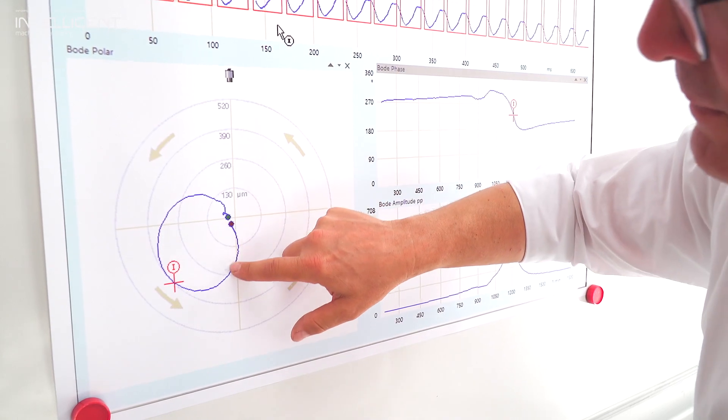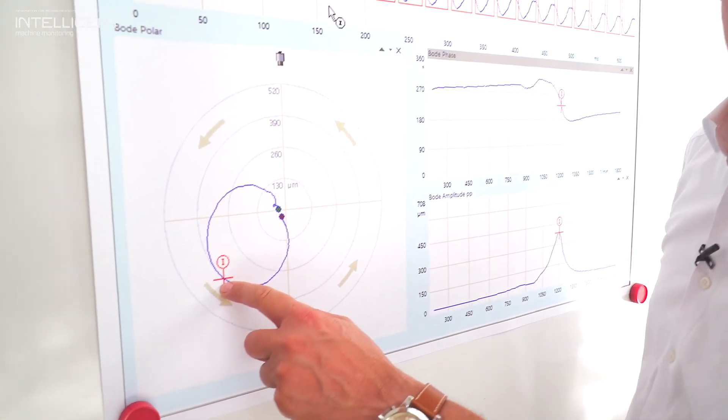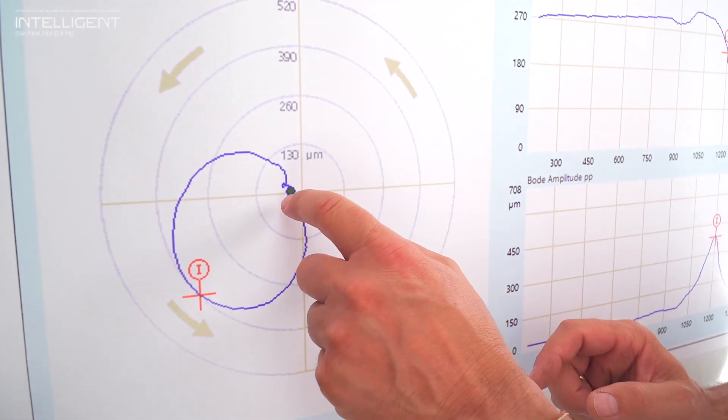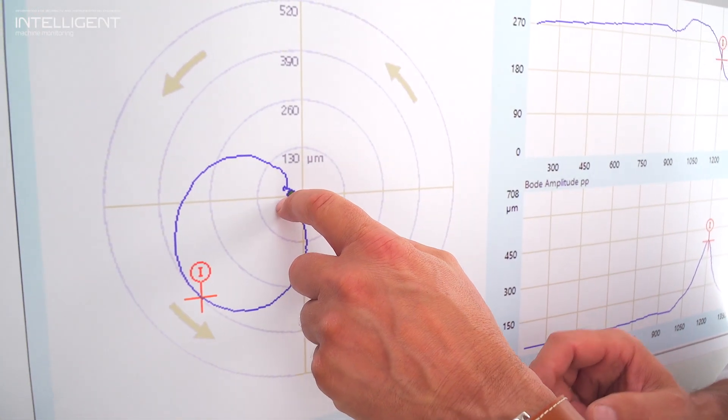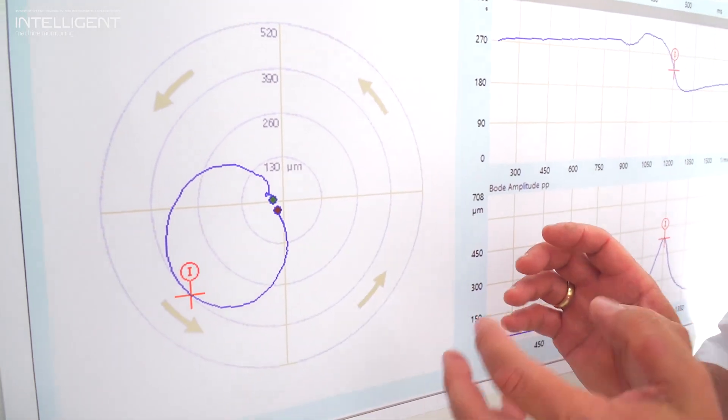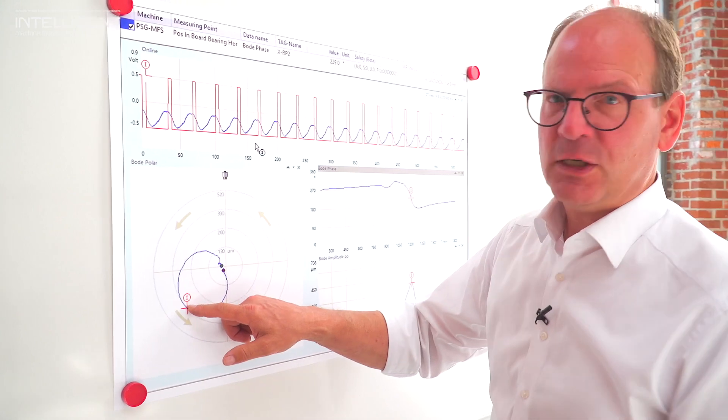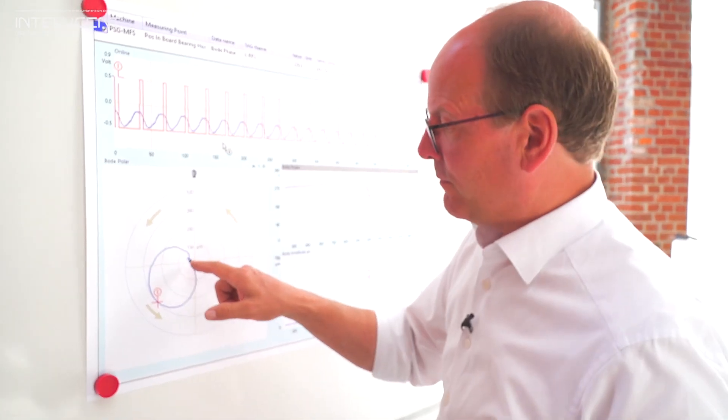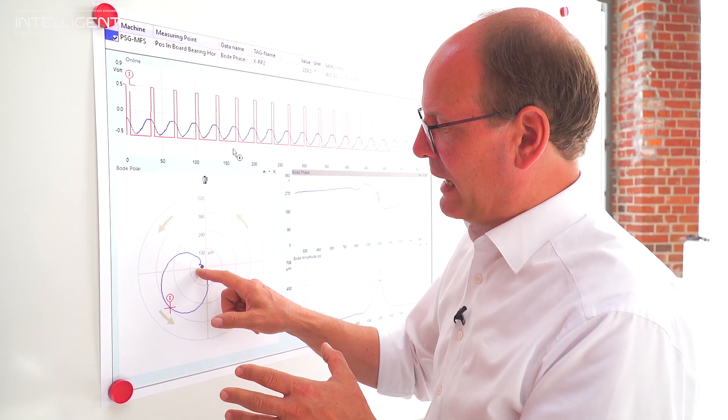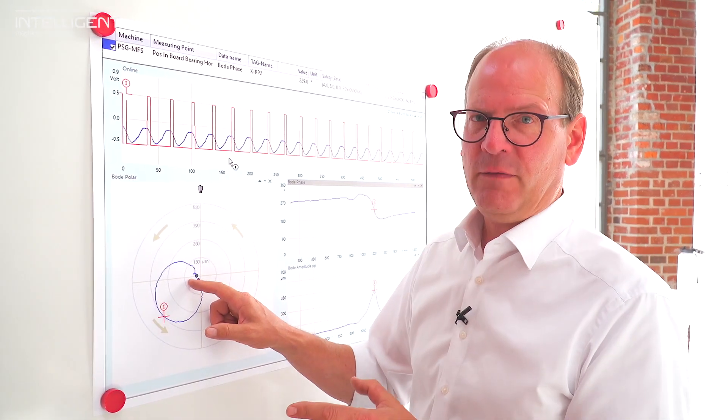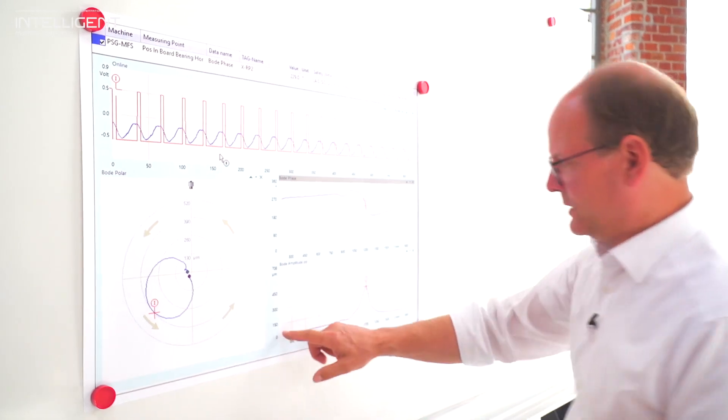Then we will reach here. This is a critical speed. That means when the machine starts we have the heavy spot and the high spot at the same position. When we reach the critical speed the heavy spot is always at the same point, but the high spot will be completely direct opposite to the heavy spot. And that is what we see here.